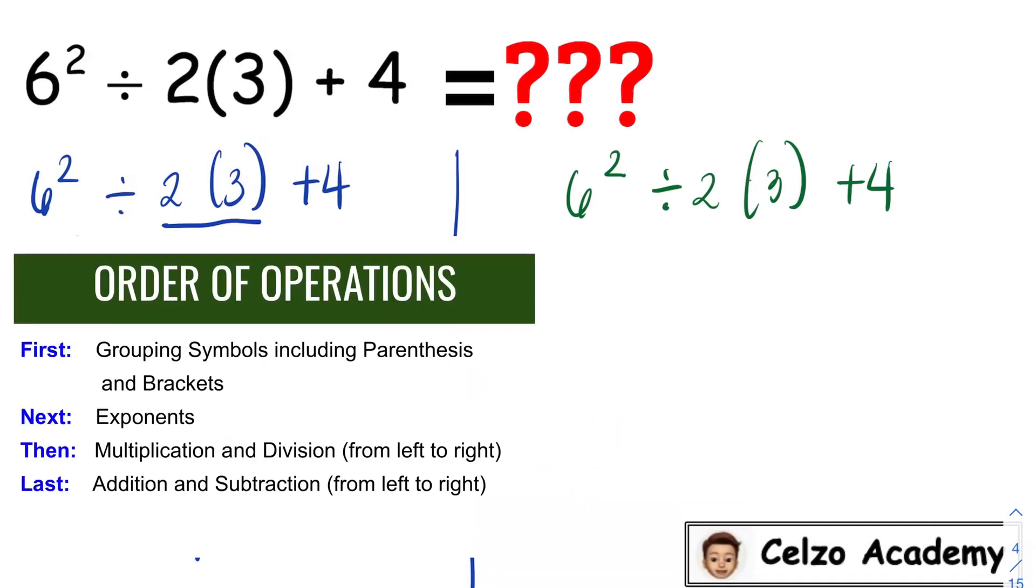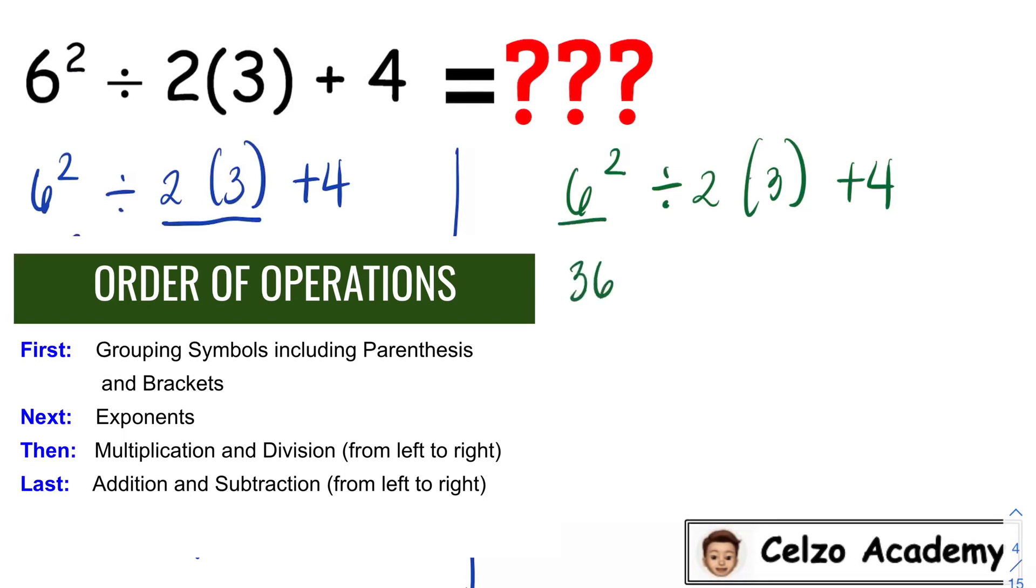In this problem, there are no grouping symbols. Parentheses here is used as a multiplication. So now I will simplify the exponent 6 squared, which is 36. So now we have 36 divided by 2 times 3 plus 4.